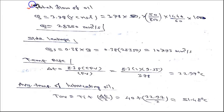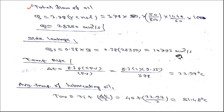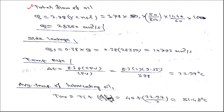Total oil flow: Q = 3.78 × r × c × Ns × L = 28350 mm³/s. Side leakage: Qs = 0.38 × Q = 10773 mm³/s. Temperature rise: ΔT = 8.3 × p × (r/c·f) / (Q/r·c·Ns·L) = 8.3 × 1 × 9.55 / 3.78 = 22.97°C. Average lubricant temperature = 40 + 22.97/2 = 51.48°C.